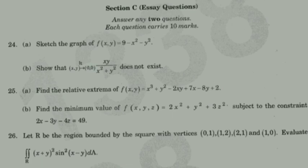Find the minimum value of f(x,y,z) = 2x² + y² + 3z², subject to the constraint 2x - 3y - 4z = 4. This is a constrained optimization problem — not simply a maximum or minimum without constraint.